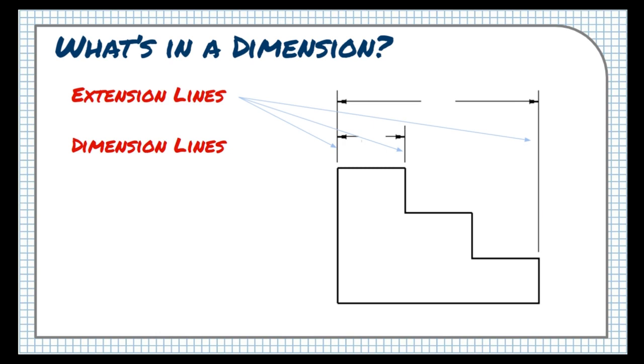Next are the dimension lines. These lines are usually positioned between the extension lines, pointing out and touching the extension lines that they refer to exactly. Dimension lines have a space in the middle, where the dimension text goes.